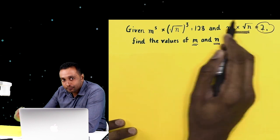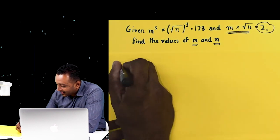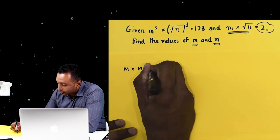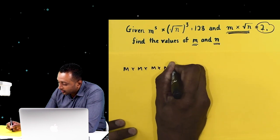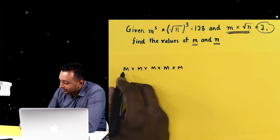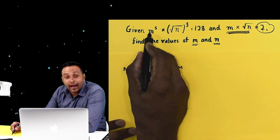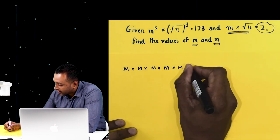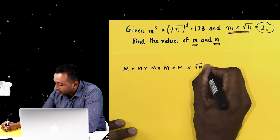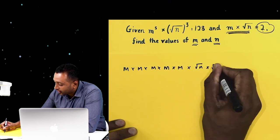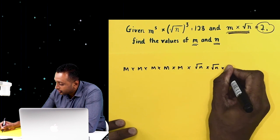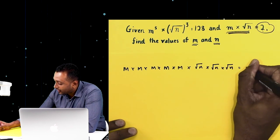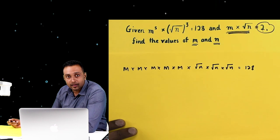So what pattern can I see here? I can see m times m times m times m times m — that is m to the power 5. And square root n to the power 3 is square root n times square root n times square root n. By the way, the answer is 128.